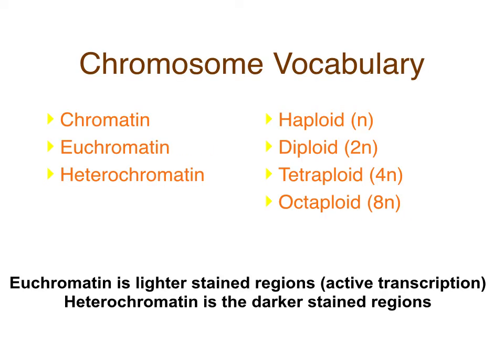There are vocabulary words you need to know, some of which you've covered before. Euchromatin and heterochromatin may be new. Haploid and diploid we've talked about — certain organisms have haploid and diploid stages. Humans have a haploid stage when we're gametes. Except for gametes, we are diploid, meaning two sets or two copies of each chromosome. Haploid means one copy of each chromosome. We symbolize haploid with 'n' and diploid with '2n'.